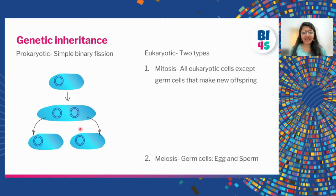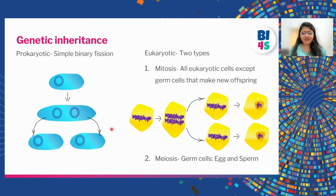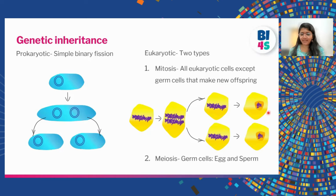In eukaryotic cells there are two types of cell division. First is mitosis, where different cell types — such as cells in our eyes, skin, or heart — divide simply, similar to binary fission. The major difference is we have multiple chromosomes: humans have 23 pairs which are copied and separated into two sister cells. The second process is meiosis, where germ cells — egg and sperm — are made. In meiosis, each cell only gets one copy: not the 23 pairs, but just 23 chromosomes.